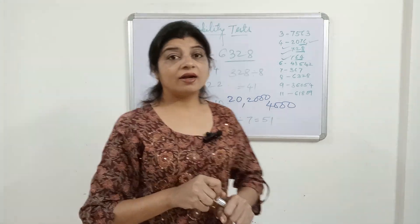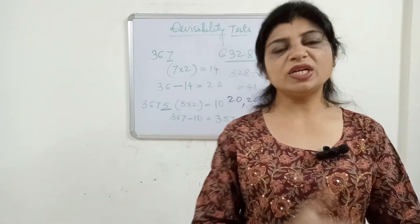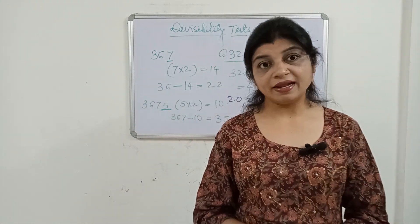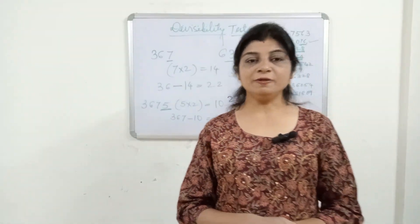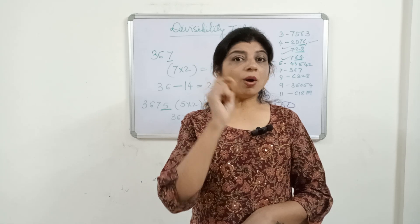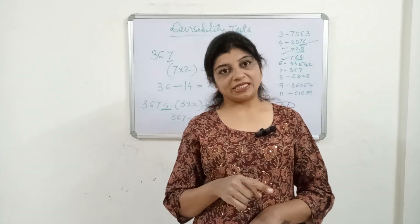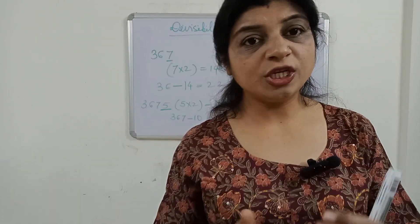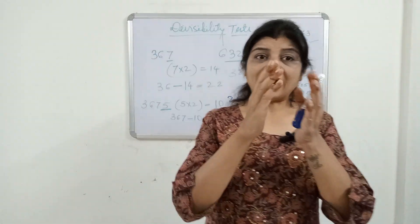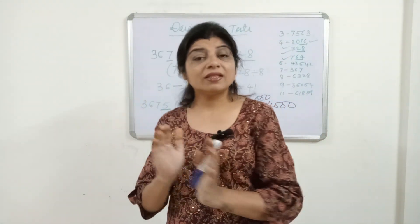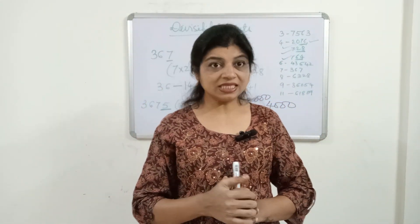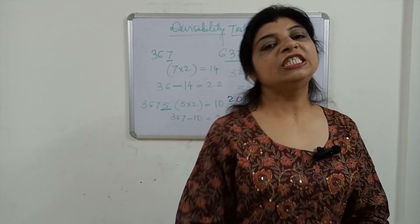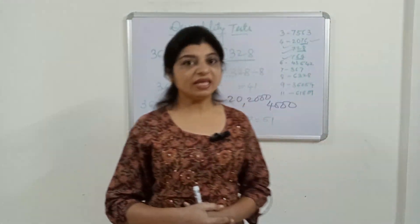Divisibility of 11 is a little tricky. It states that a number is divisible by 11 then and then only when you add the digits at odd places and add the digits at even places separately, then subtract them. Whatever difference you get — if it is either zero or a multiple of 11, then the number is divisible by 11.